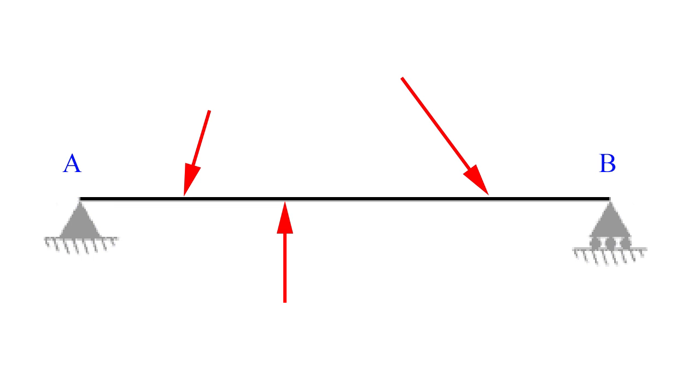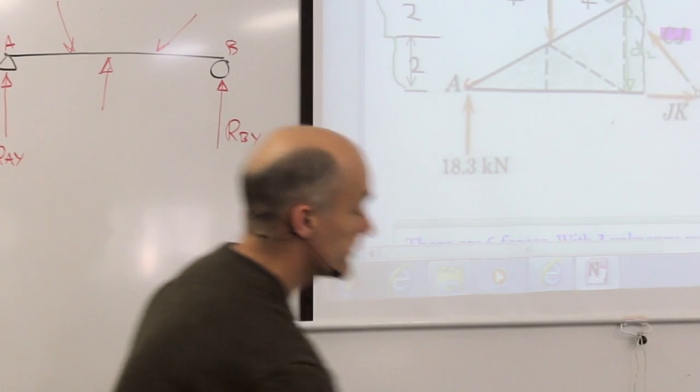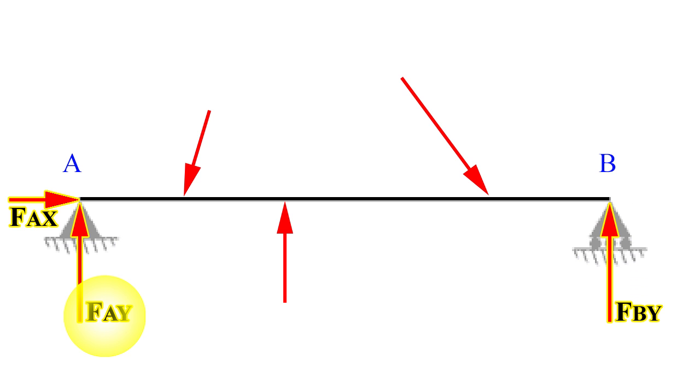How many unknowns in this question? There's one unknown there, that's a vertical force, and there's two unknowns here, a vertical and a horizontal. If this was joint A and B, then this would be reaction B in the Y direction, reaction AY, reaction AX. How many unknowns in this question? I don't know this one, this one, or this one. Three unknowns.